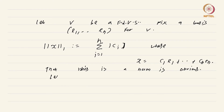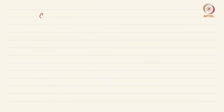Now let ‖·‖ be some other norm on V. The claim is that ‖·‖ and ‖·‖₁ are equivalent.